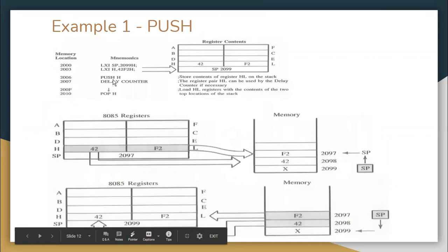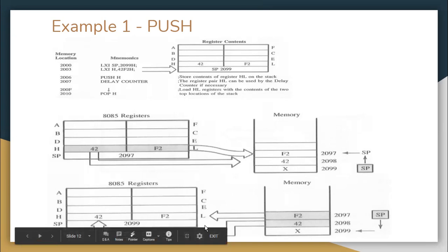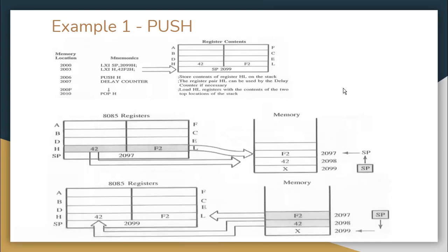Here is a small example: the stack pointer is initialized to 2099. Then LXI H 4252 — after executing, the HL pair holds 4252. Now execute PUSH H: H is pushed first, then L — the stack pointer decrements from 2099 to 2098 then to 2097, and the H register value is stored. When we later issue POP H — after some delay or subroutine code — the top value is popped and placed in L, and the next value is popped and placed in H, correctly restoring the HL pair.